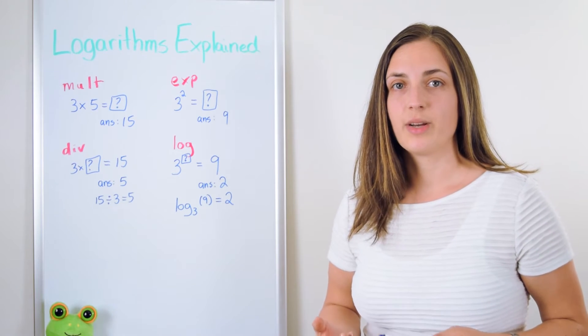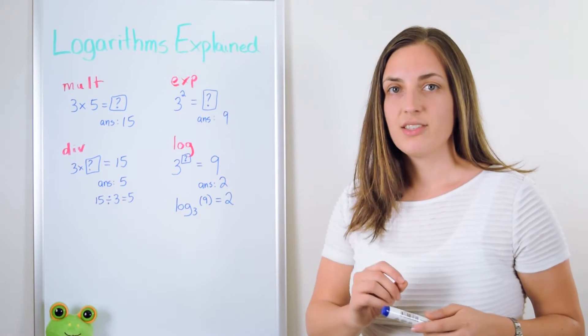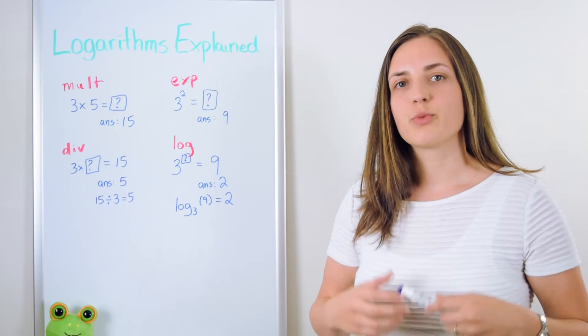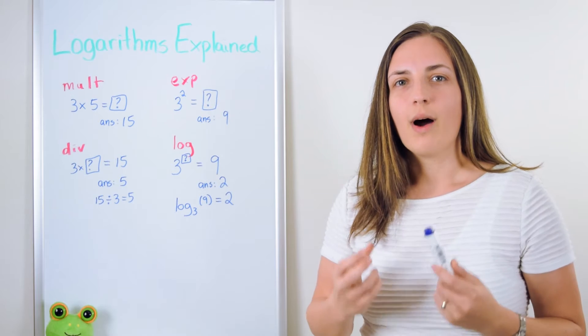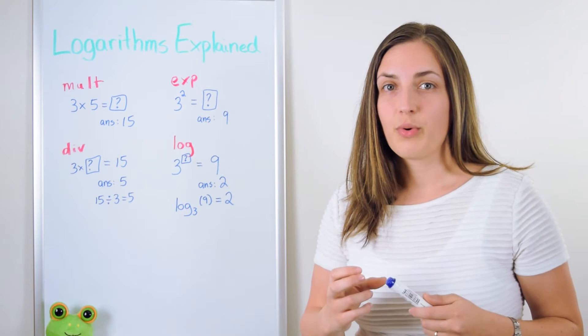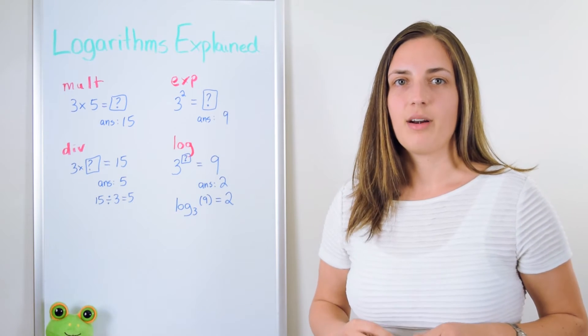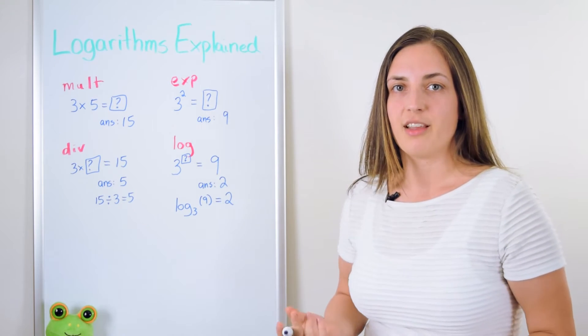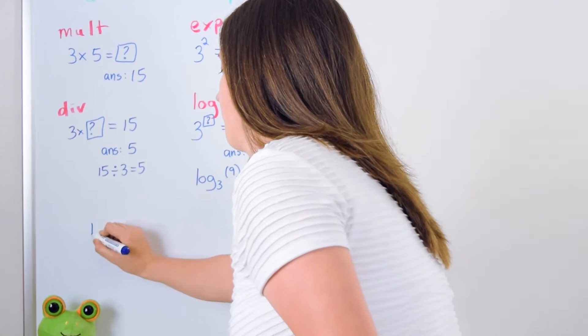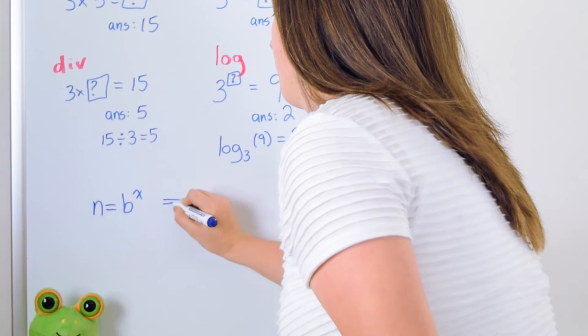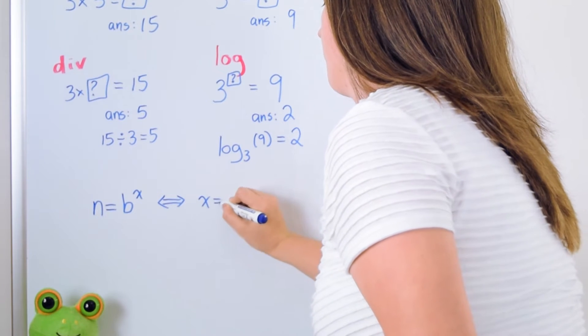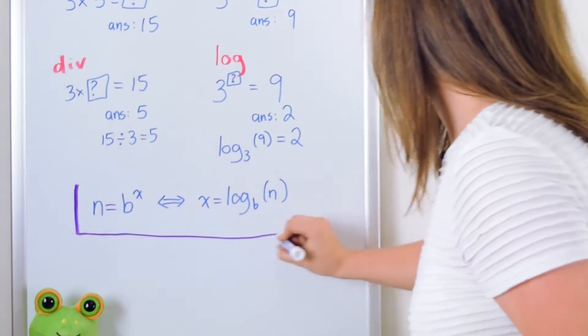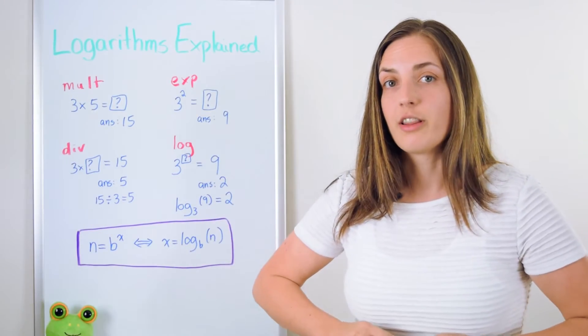So our notation is written as log base 3 of 9 and we know that the answer is 2 because we know that the question is what power should we raise 3 to in order to get the number 9. So that's why our answer is 2. So more generally we have this: n is equal to b to the power of x if and only if x is equal to the log base b of that number. That's the definition of a logarithm.